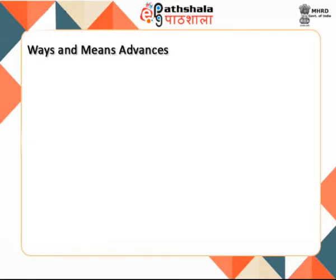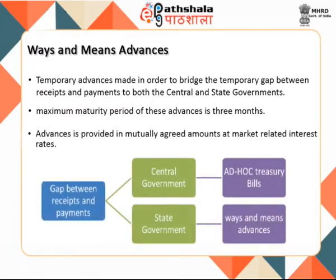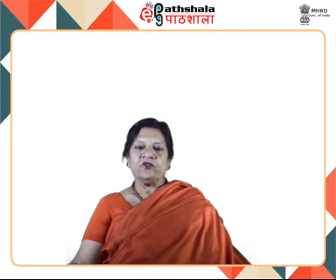Ways and means advances are temporary advances made in order to bridge the temporary gap between receipts and payments to both the central and state governments. The maximum maturity period of these advances is 3 months. In practice, the gap in respect of the central government used to be met by the issue of ad hoc treasury bills, while the one in respect of state governments is met by the ways and means advances. Under WMA, the RBI gives ways and means advances to the central government in mutually agreed amounts at market-related interest rates.